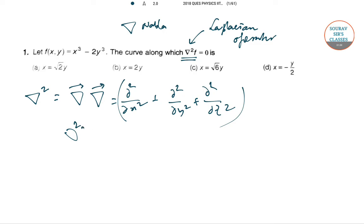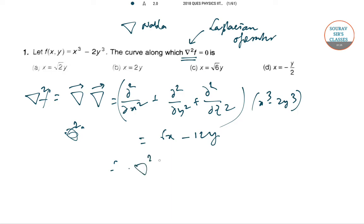Applying this to f: f equals x⁴ minus 2y⁴. The second derivative with respect to x gives 12x², and the second derivative with respect to y gives -24y². There is no z part. Setting the Laplacian equal to 0: 12x² minus 24y² equals 0, which gives 6x equals 12y, so x equals 2y. Option B is the correct answer.